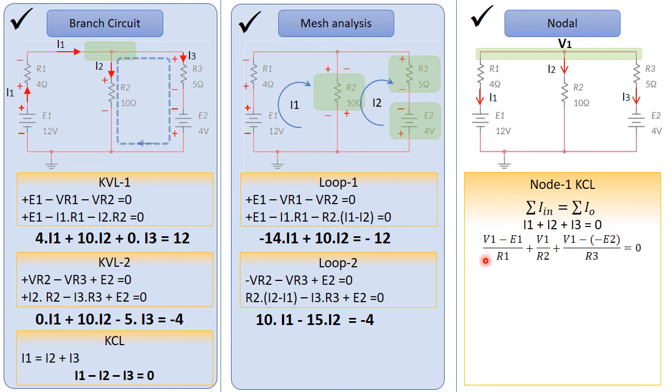Now, what is the value of I1? I1 is this voltage minus this voltage over the resistance R1. So V1 minus E1 over R1. So this is the first current I1. I2, which is V1 over R2.